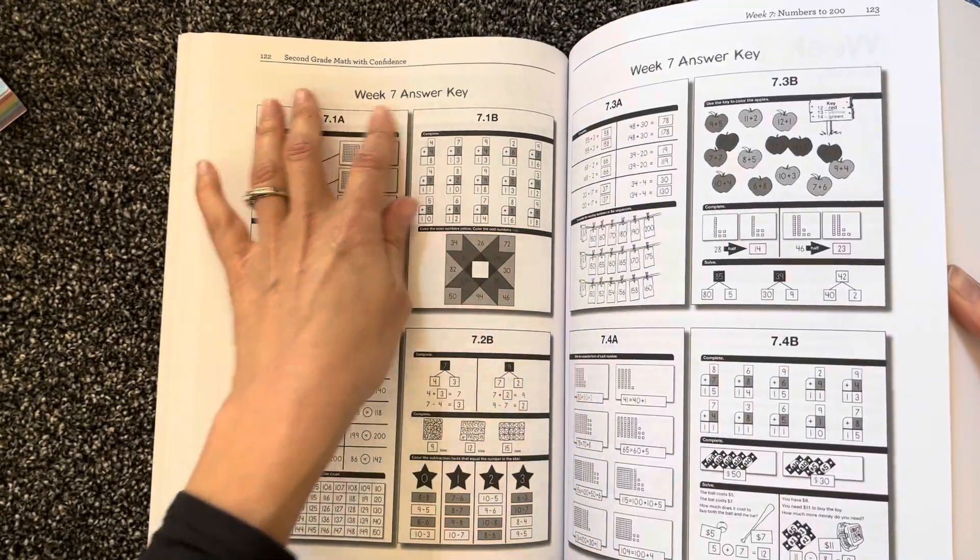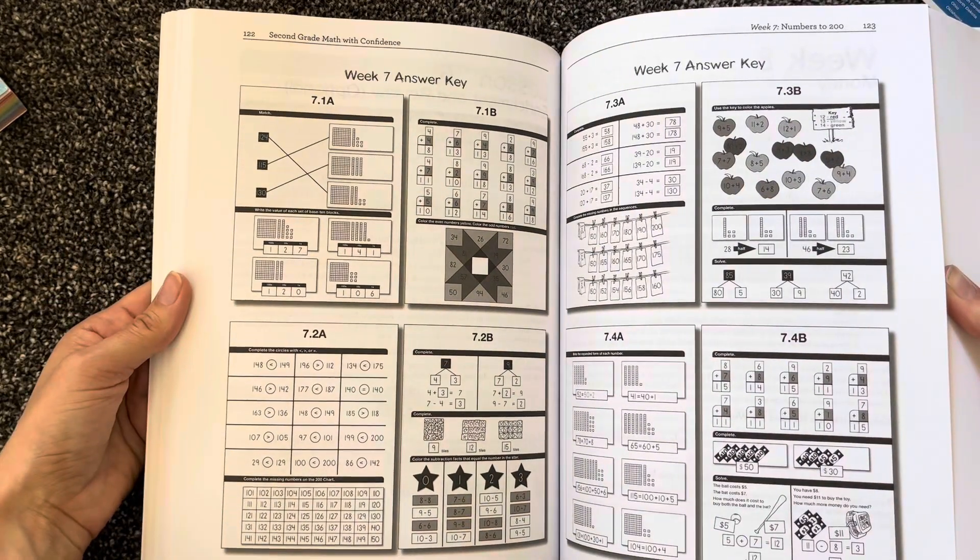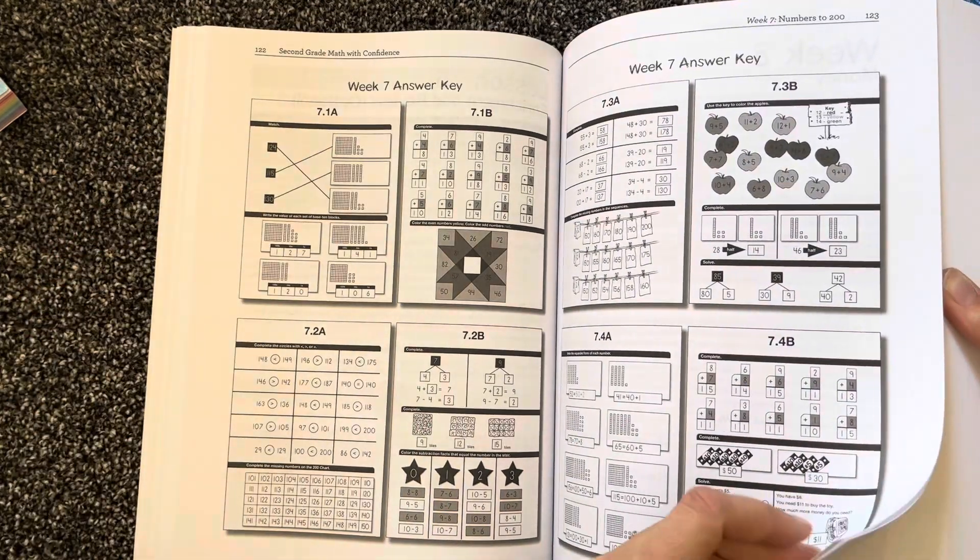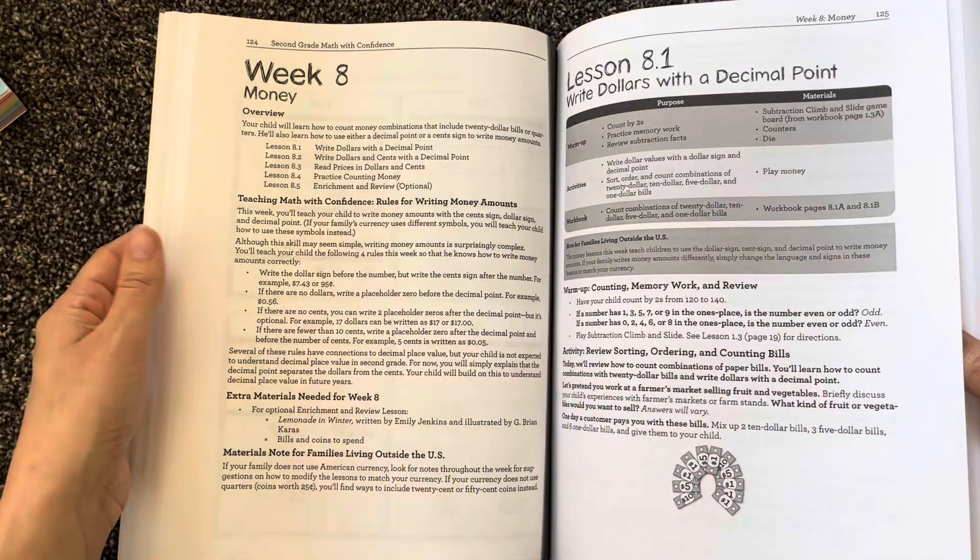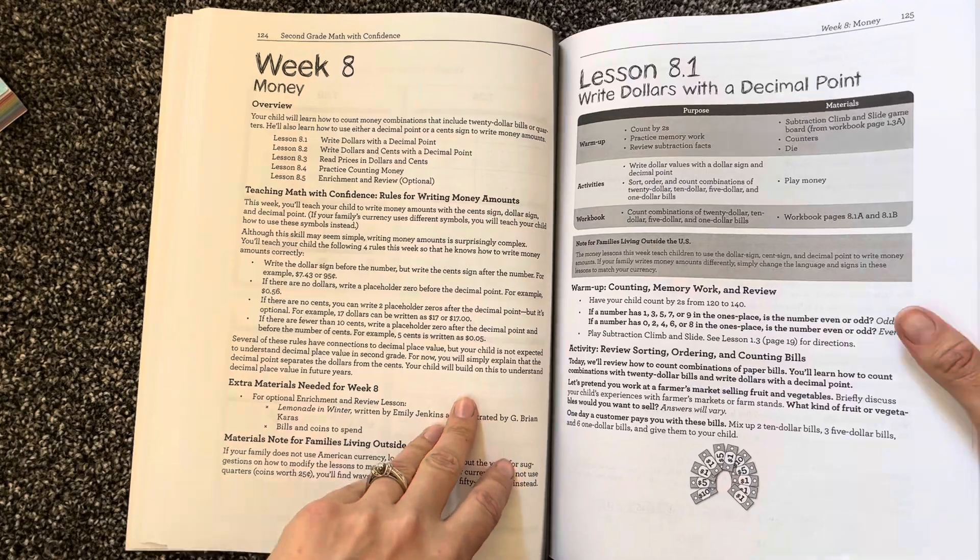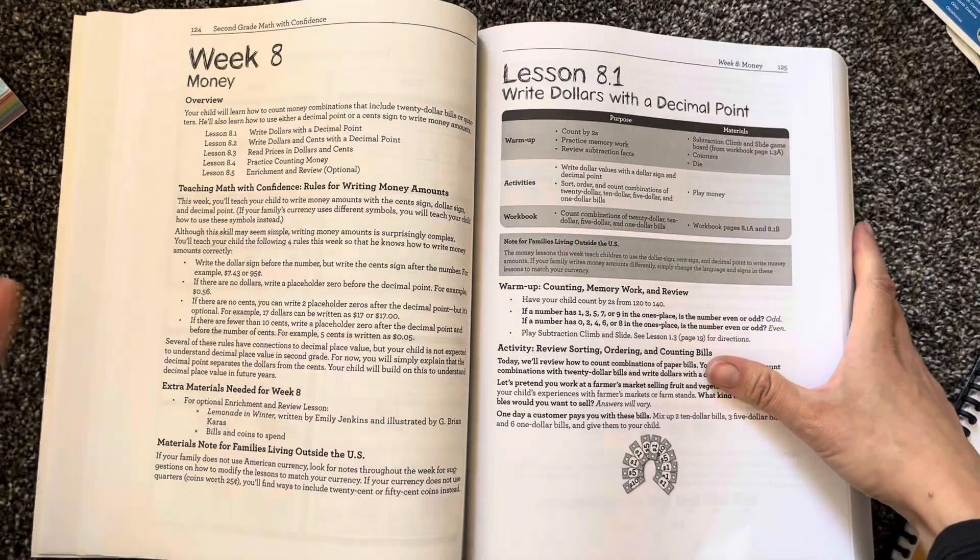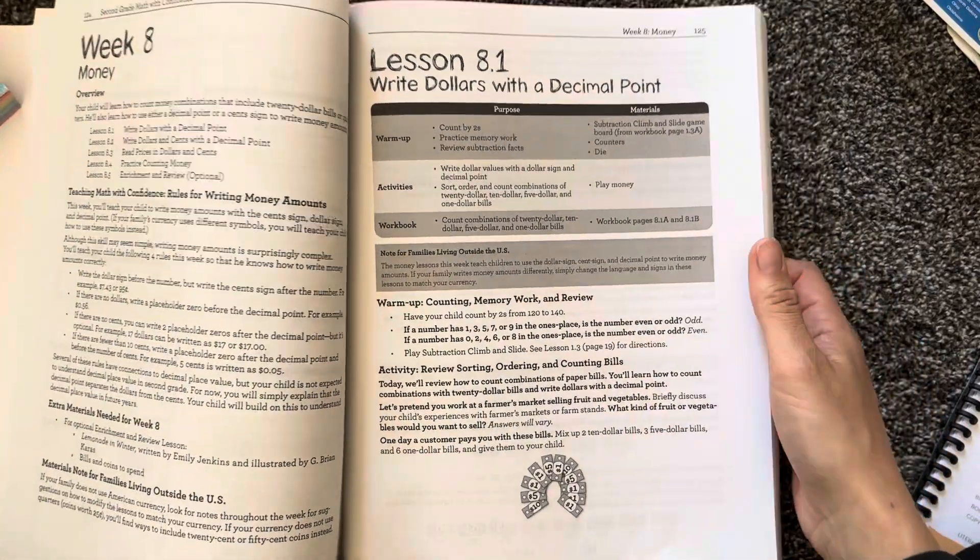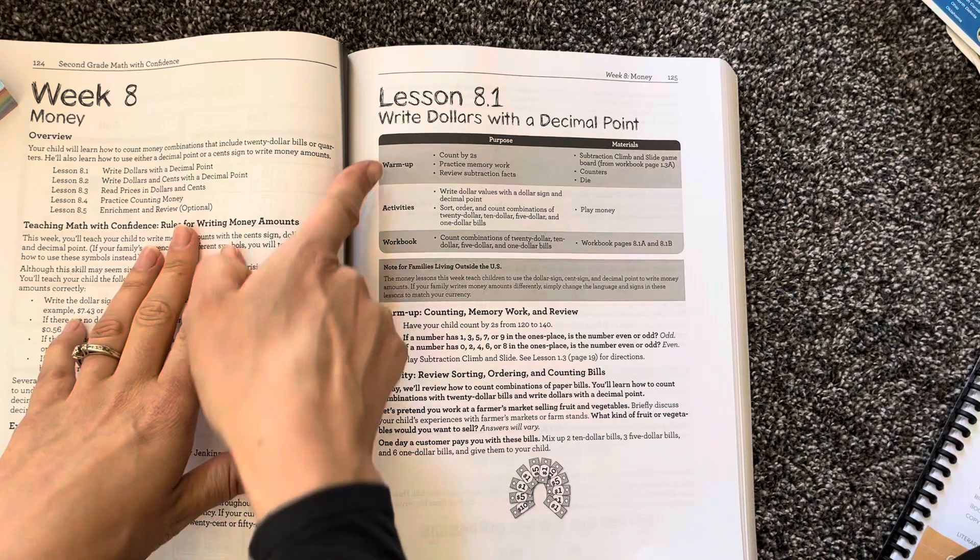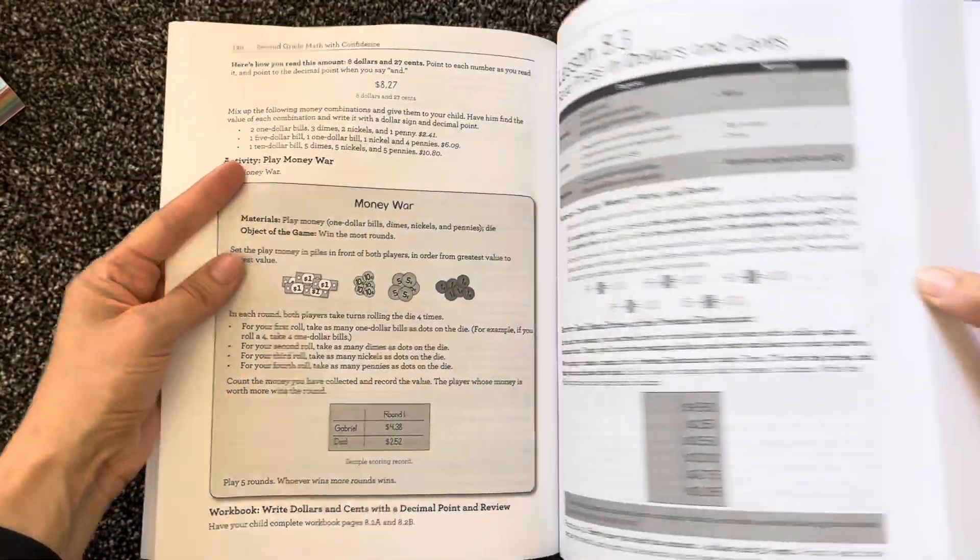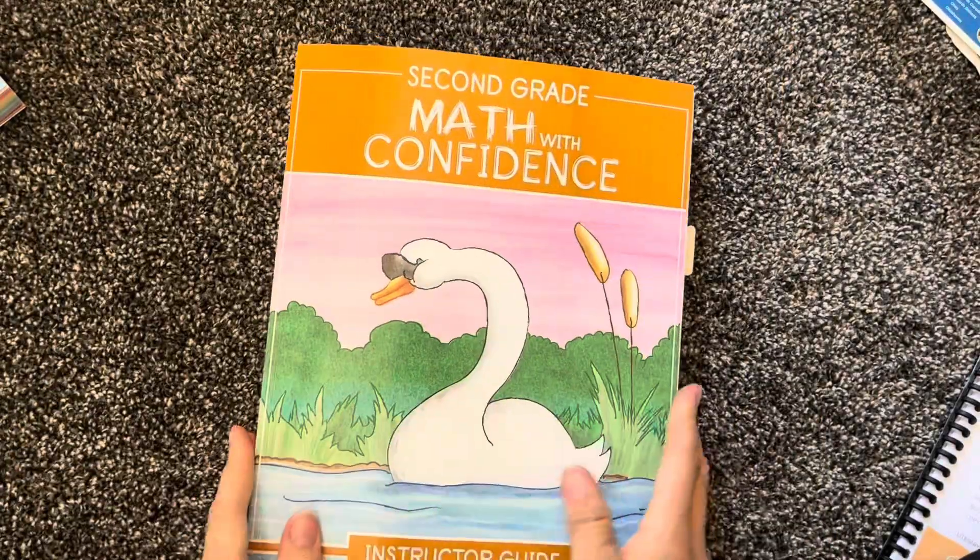You also have answer key after every week. So as the math gets higher and harder, you can go ahead and look that up. It should be in the back of every week. There's also going to be a book recommendation oftentimes in each unit, which is really cool - books that teach math concepts. You can just get them at the library. Here's another example of a lesson. You'll have warm-up, activities, and workbook. So you can kind of see the next lesson.